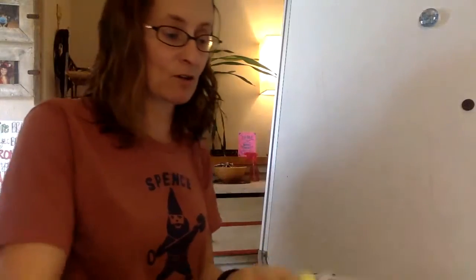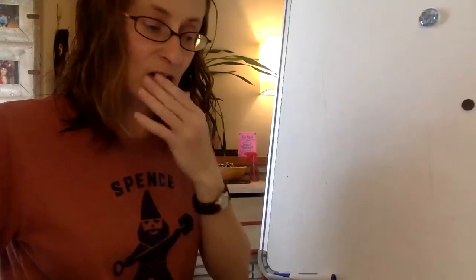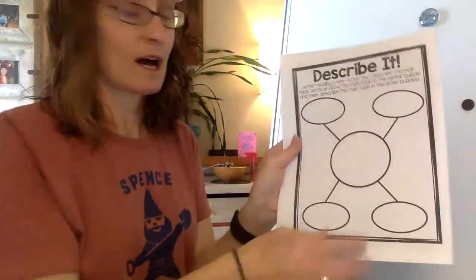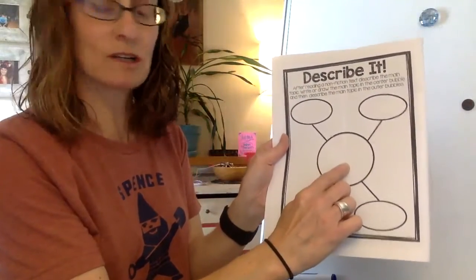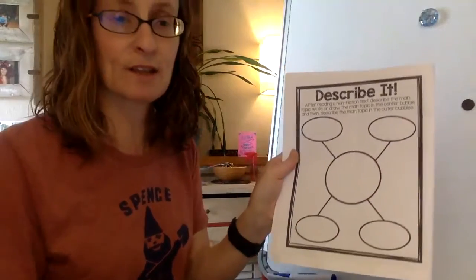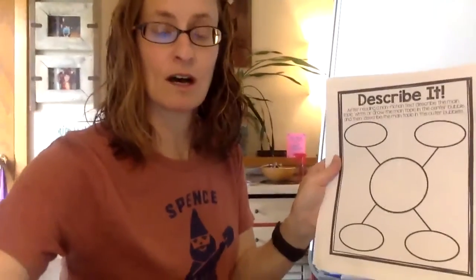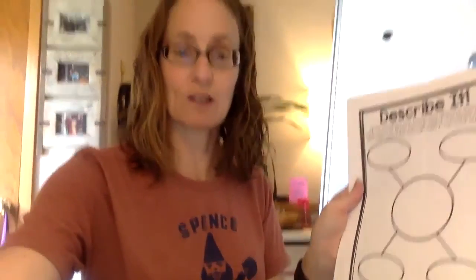So if I were to fill out the graphic organizer, I'd write 'koalas' in the middle and maybe draw a picture. Then in the outer bubbles, you pick four ways the author described koalas, going back to the things we highlighted. Do that for both animals. Also on Epic, I assigned you a collection called 'Animals.' Anytime during the week, pick one, two, or three books and think about how the author used the text structure of description to help the reader visualize and understand the information.